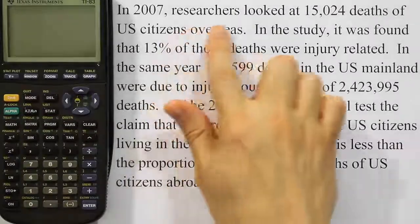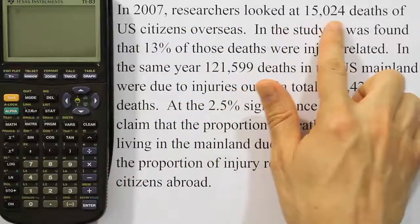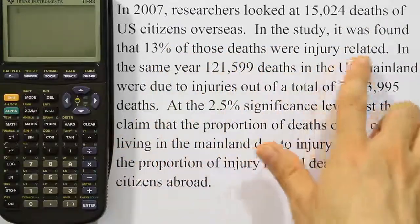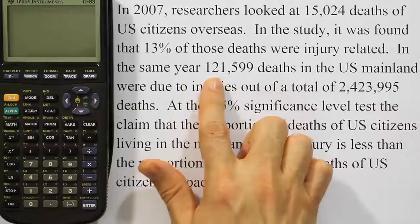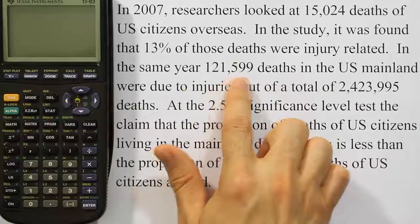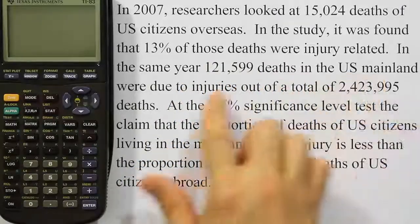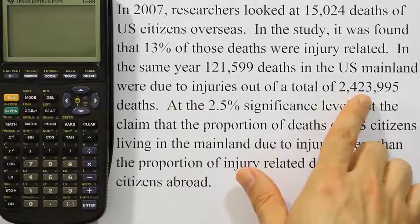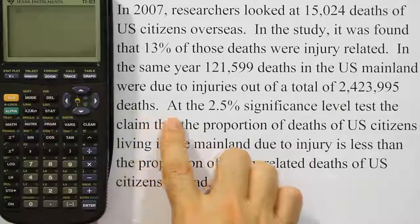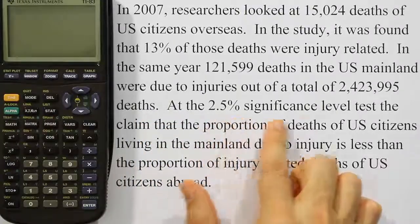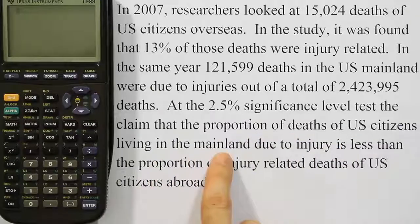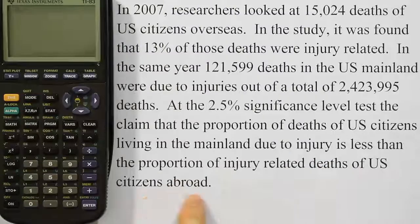In 2007, researchers looked at 15,024 deaths of US citizens overseas. It was found that 13% of those deaths were injury-related. In the same year, 121,599 deaths in the US mainland were due to injuries out of a total of 2,423,995 deaths. At the 2.5% significance level, test the claim that the proportion of deaths of US citizens living in the mainland due to injuries is less than the proportion of injury-related deaths of US citizens abroad.